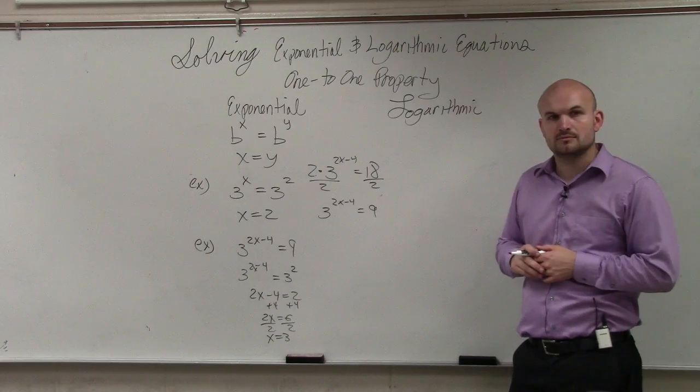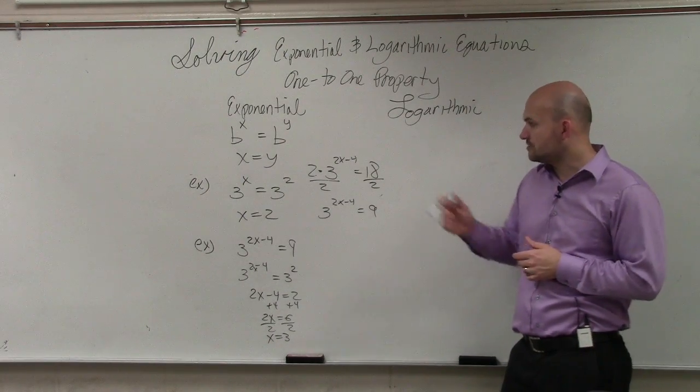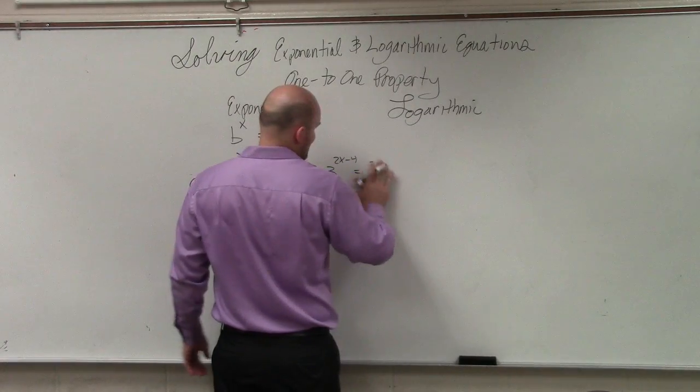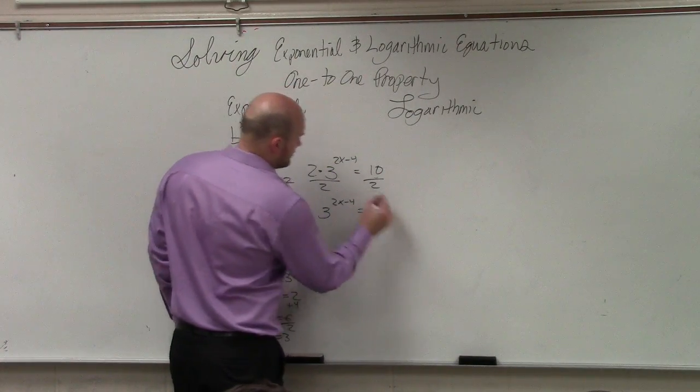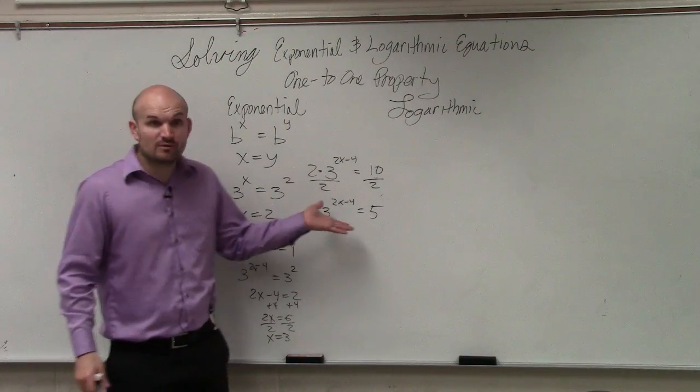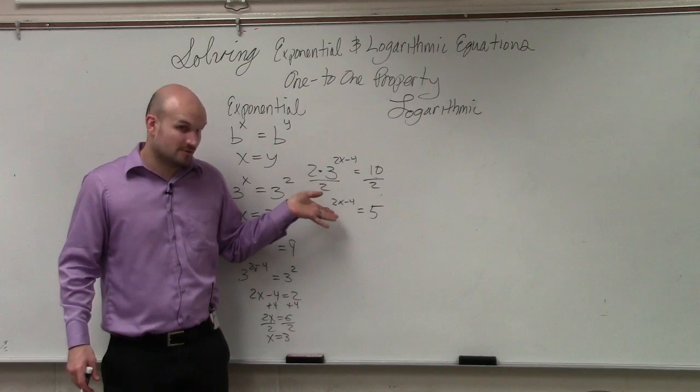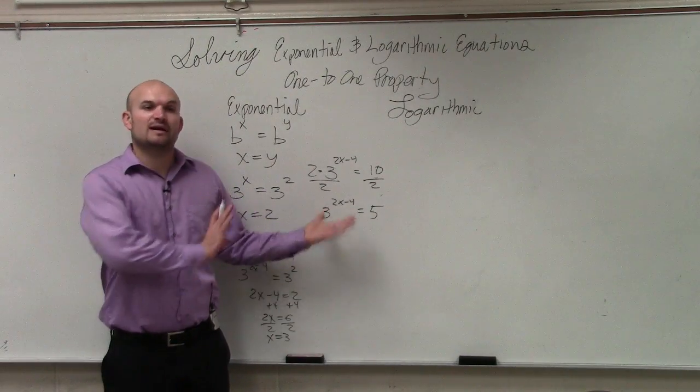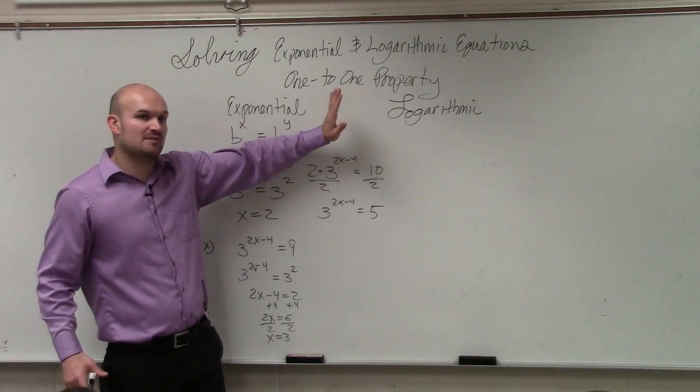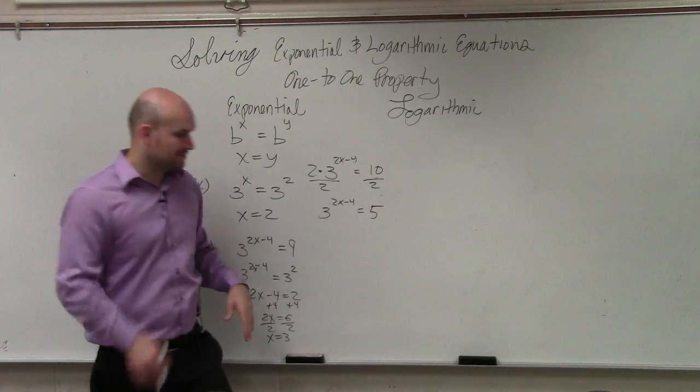2's not a perfect square. Oh, so you're saying, like, what if this was, like, 10? Well, good point. Then you'd have this. You can't use the one-to-one property anymore, right? I can't write 5 as a base 3, correct? So later on, I'll show you what to do from there. Right now, we're just focusing on solving problems with the one-to-one property. But when you can't use the one-to-one property, I'll show you what to do. Okay?